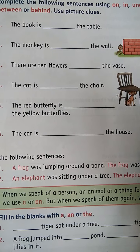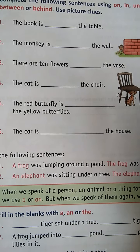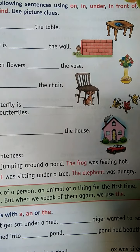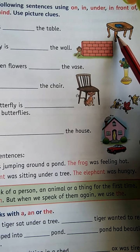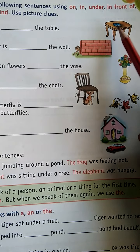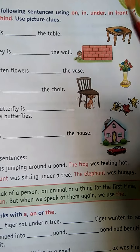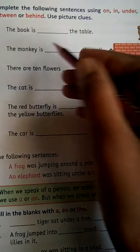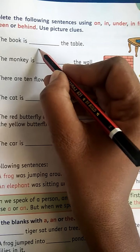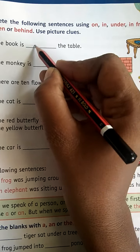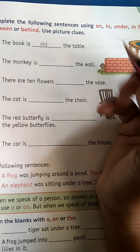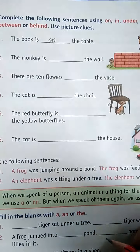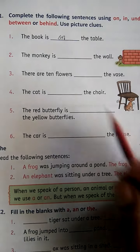Is that clear? So, the book is — the table. Table ke kahan par hai book? This is table, aur table ke kahan hai book? Upar. Toh apan kya likhenge? The book is on the table. On means hota hai upar.